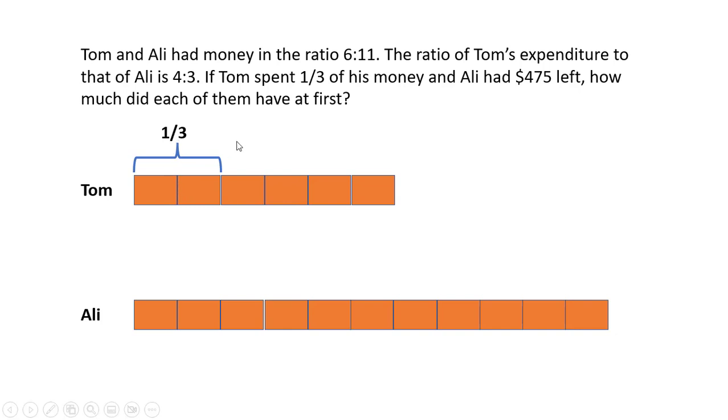So this is one third of Tom's money, and this should be equal to 4 units. Now we have a way to compare all of them here. So once we have put down that Tom's expenditure is 4 units...